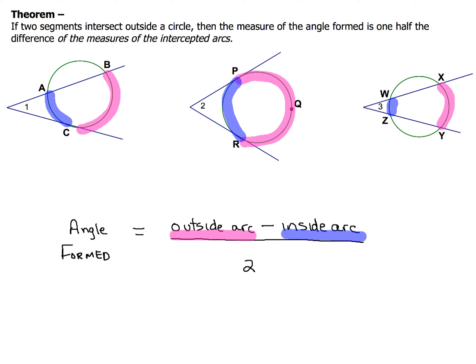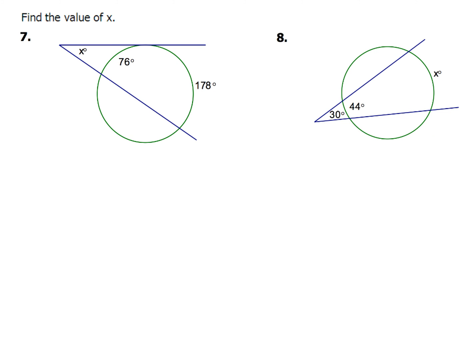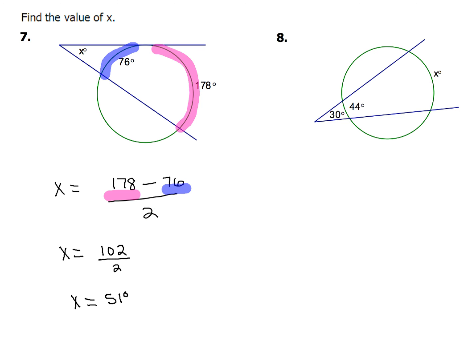We've got two more examples using this theorem. Two highlighters again — highlight the outside arc and then the inside arc. X is the angle formed. So: x equals 178 minus 76, all divided by two. Subtracting gives 102, and 102 divided by two gives you 51 degrees. That's it — no big deal.